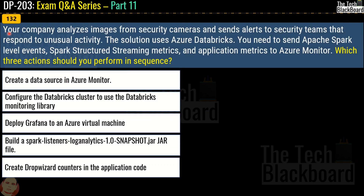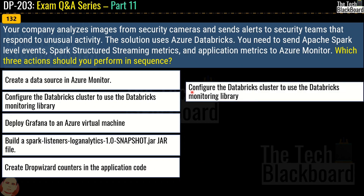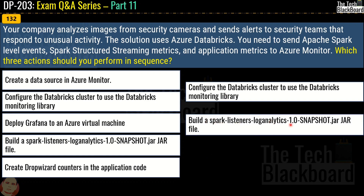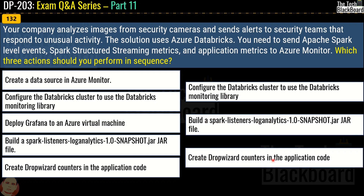Question 132: Your company analyzes images from security cameras and sends alerts to a security team that responds to unusual activity. The solution uses Azure Databricks. You need to send Apache Spark level events, Spark Structured Streaming metrics, and application metrics to Azure Monitor. Which three actions should you perform in sequence? The correct answer in sequence is: first, configure the Databricks cluster to use the Databricks monitoring library; then build a Spark listener log analytics snapshot jar; and finally, create Dropwizard counters in application code.